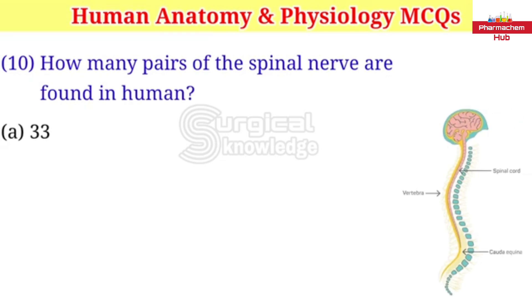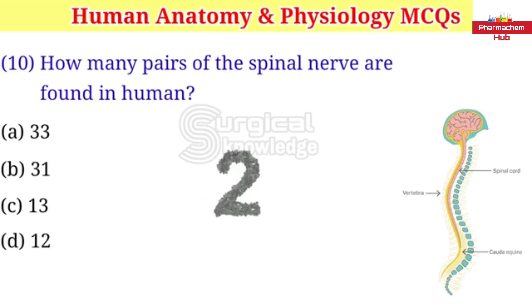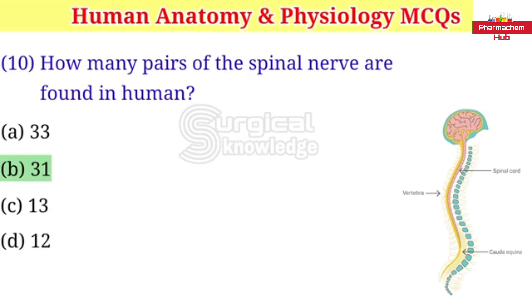How many pairs of spinal nerves are found in humans? A. 33 B. 31 C. 13 D. 12. Right answer is 31.